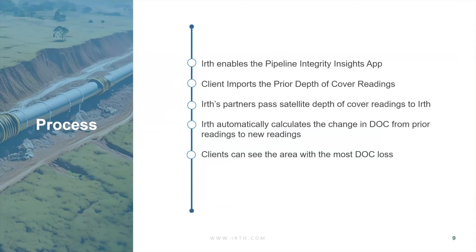In the product itself, the process is simple. We have an app called Pipeline Integrity Insights for Depth of Cover — we enable and turn it on. Then we work with you to import your prior depth of cover readings: manual readings, ILI readings, whether in CSV, shapefile, Excel, or via API. Once the data is in and we know those locations, we pass that to our satellite provider via an API, and they pass back the imagery data into the system.